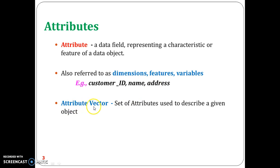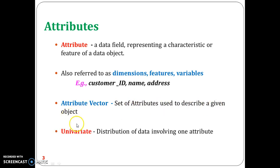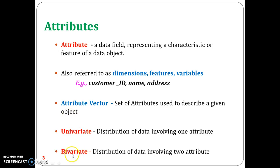Next is the attribute vector. An attribute vector is the set of attributes used to describe a given data object. The distribution of data can be univariate — involving only one attribute — or bivariate, involving two attributes.